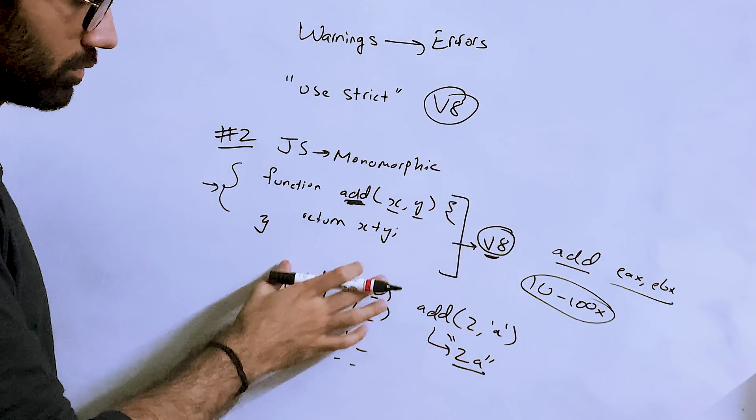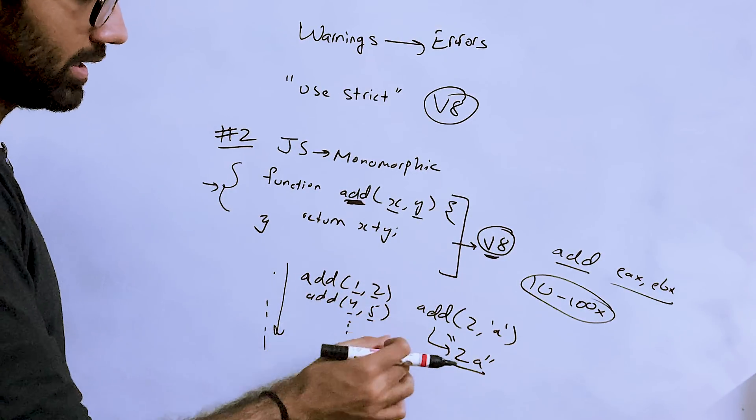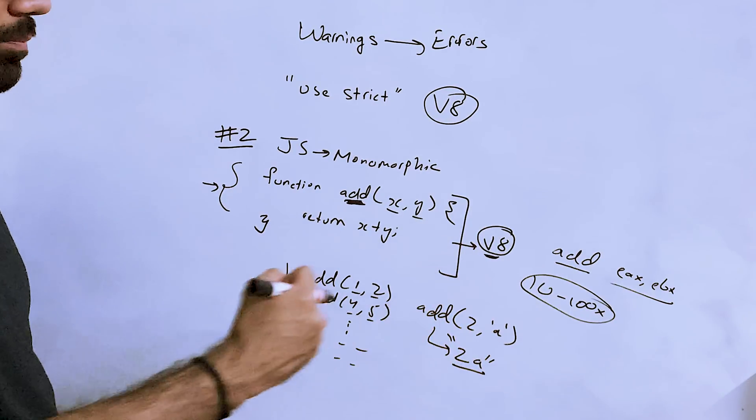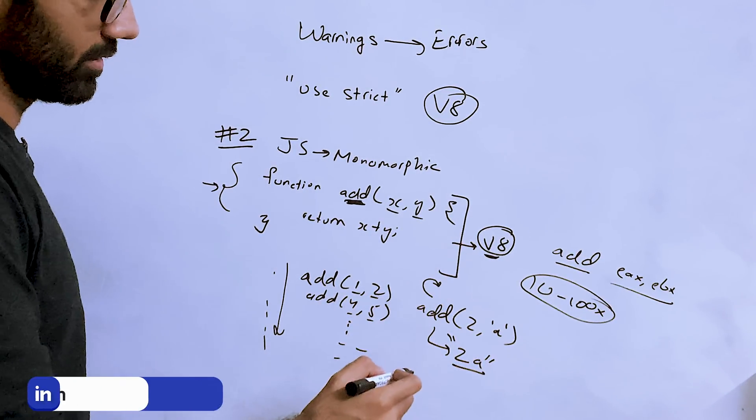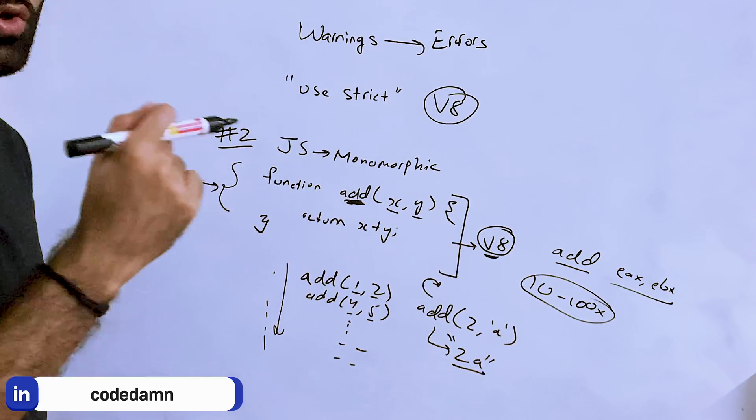Compared to its monomorphic version. So monomorphic version was the one where you were only passing in a single type of input, and polymorphic version was the one where the JavaScript compiler has to de-optimize its optimization and then call the JavaScript version again and again.